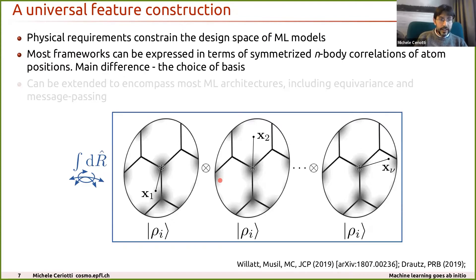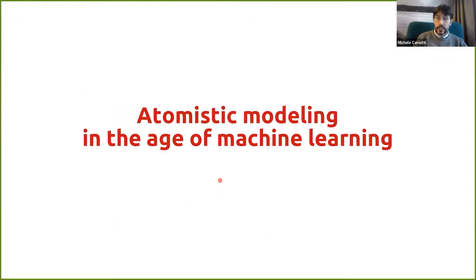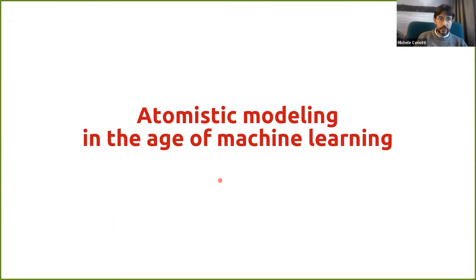Different frameworks depend on the basis which is chosen and the way the projection is computed. Actually, you can generalize these constructions in many different directions. Recently we have been able to show that even some deep learning frameworks based on message passing constructs can be expressed in an appropriate limit in the language of these atom-centered correlations. Once you have laid out the foundations of these techniques, it's interesting to give a brief overview of different applications that are made possible by this machinery.